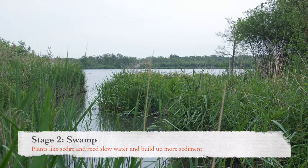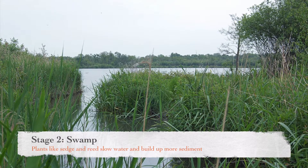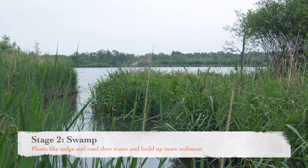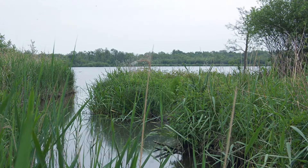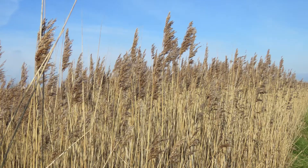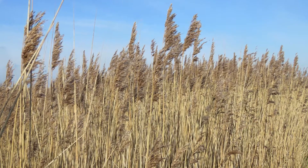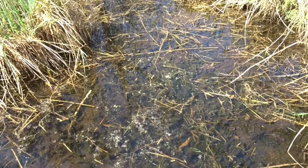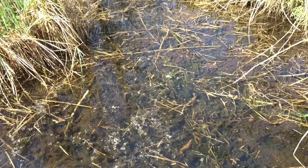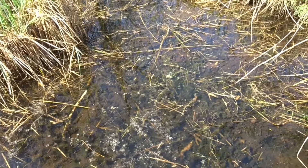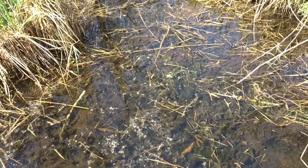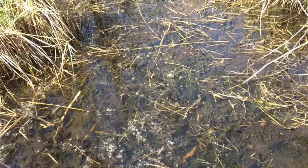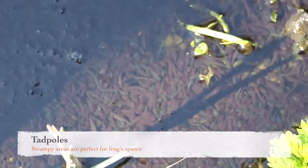Stage 2: Swamp. As the water becomes shallower, plants like sedge and reed start to colonize. These slow the water and trap more sediment, and when they die back and rot it raises the soil level once again. This swampy terrain is ideal for aquatic insects and animals like tadpoles.